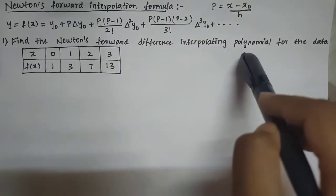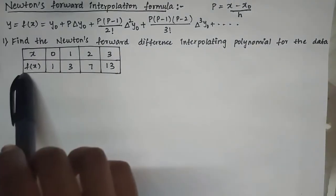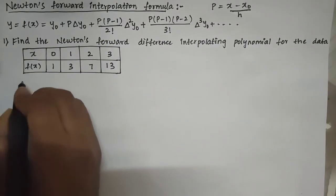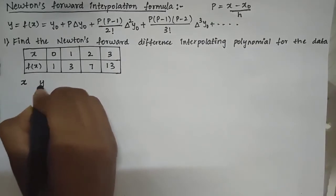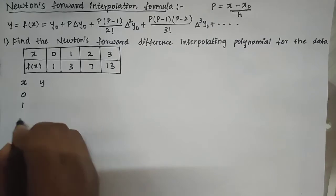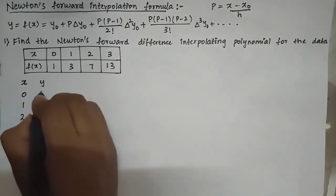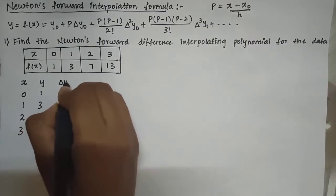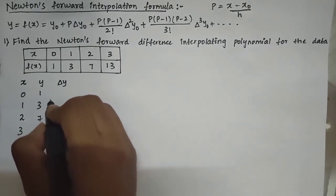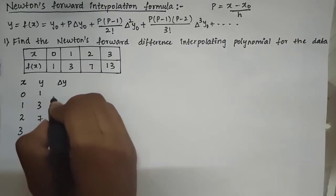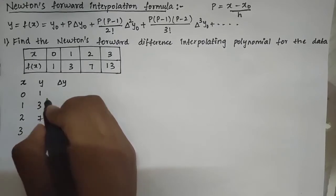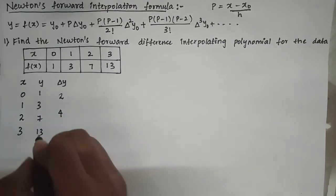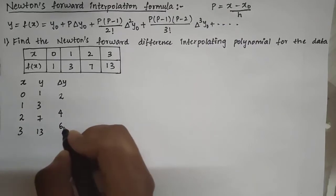Let us see the first problem: find the Newton's forward difference interpolating polynomial for the given data. The x values are 0, 1, 2, 3 and the y values are 1, 3, 7, 13. Now we draw the forward difference table. The first differences Δy are: 3−1=2, 7−3=4, and 13−7=6.